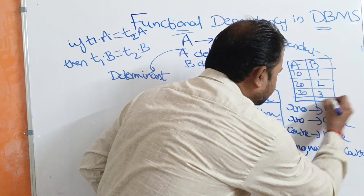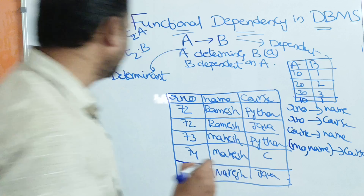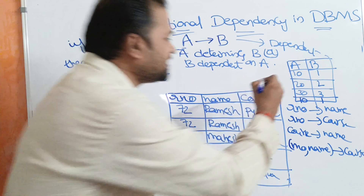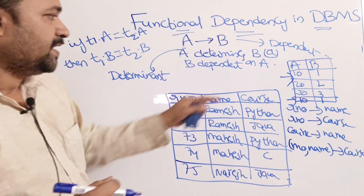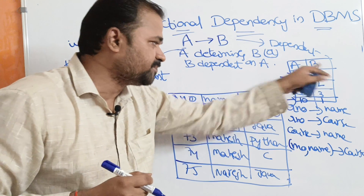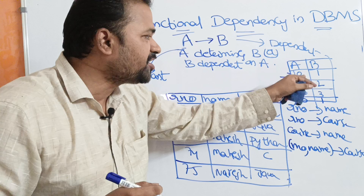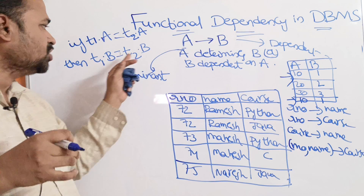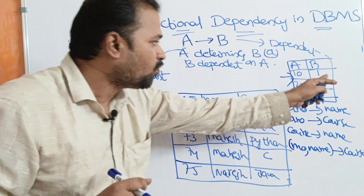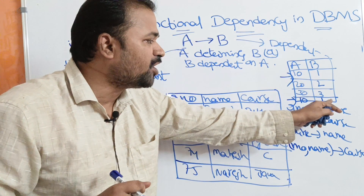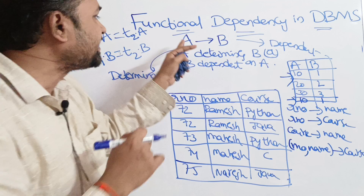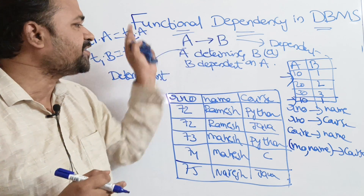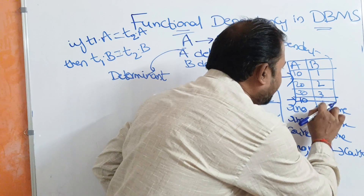Now suppose we add another row: (10, 1). Observing these two tuples where T1.A = 10 and T2.A = 10, since the A values are equal, T1.B must equal T2.B. T1.B is 1 and T2.B is 1 — they are the same. So we can say A functionally determines B, meaning B is functionally dependent on A.